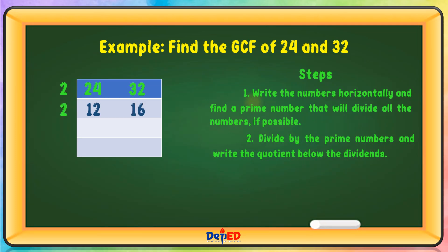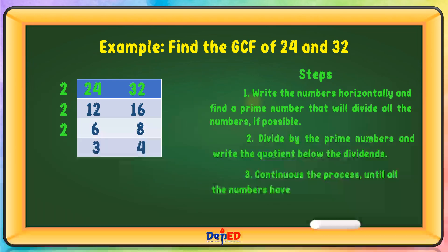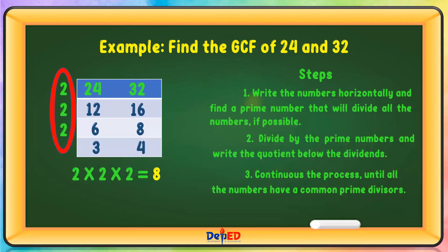2 divided into 12 equals 6, and 2 divided into 16 equals 8. Then 2 divided into 6 equals 3, and 2 divided into 8 equals 4. We multiply these prime numbers: 2 times 2 times 2 equals 8. Therefore, the GCF of 24 and 32 is 8.